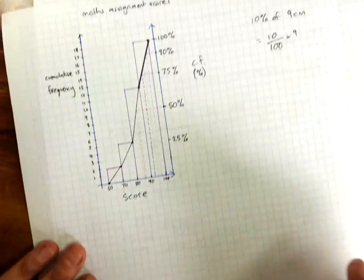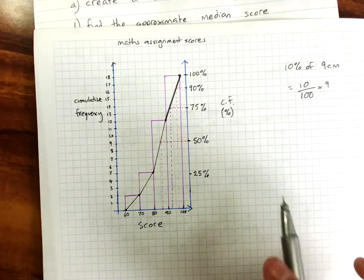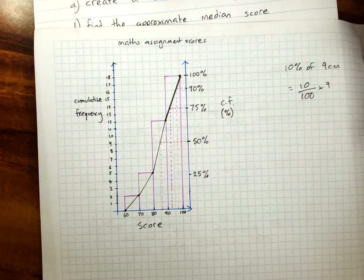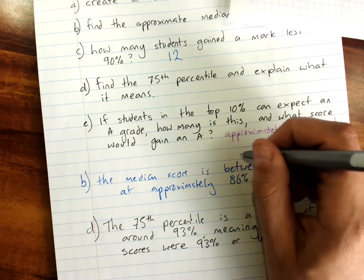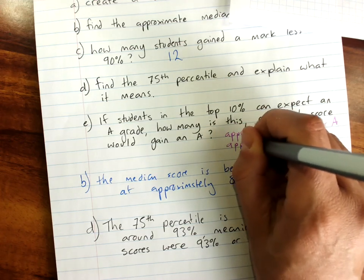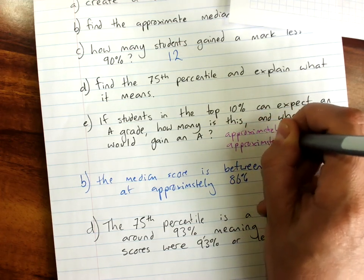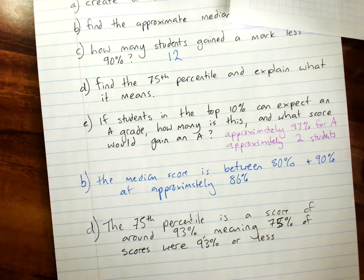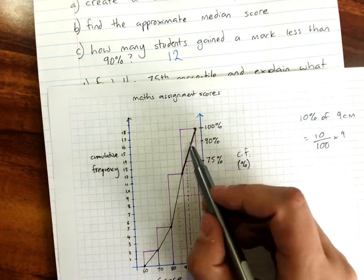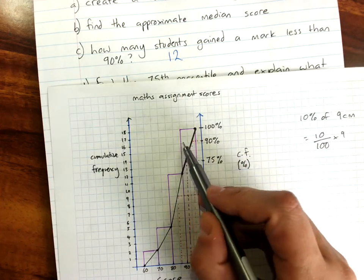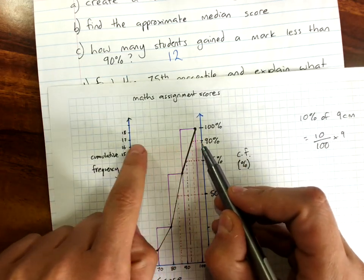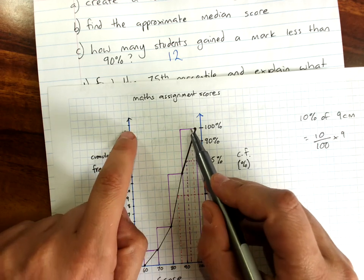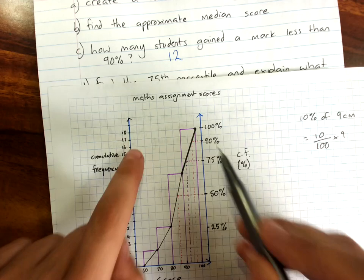And how many students is this? It's probably easiest just to find 10% of 18, that is 1.8 or approximately 2 students. But again, you could work that out from the ogive because you'll see that here if I went straight across it's just above 16 so I've got just under 2 students in that top 10%.